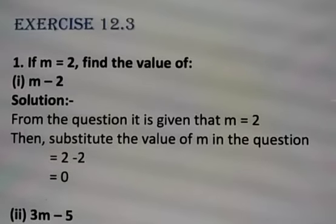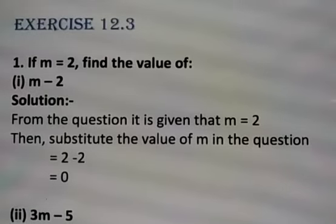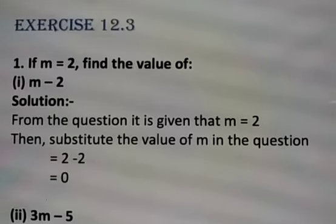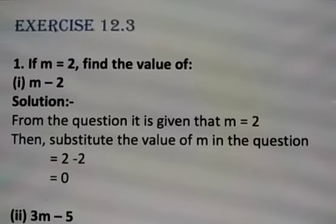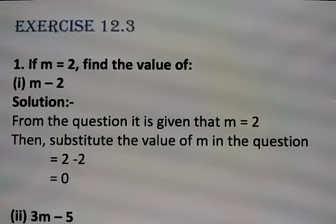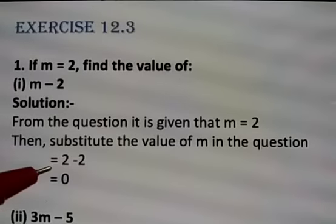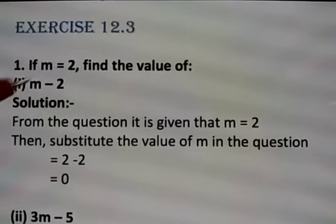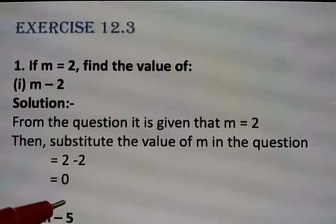First question: if m is equals to 2, find the value of m minus 2. The solution — what is the value of m? Given 2. We have to write the given number in the equation. m minus 2 means m is 2, so 2 minus 2 is 0. That's it.